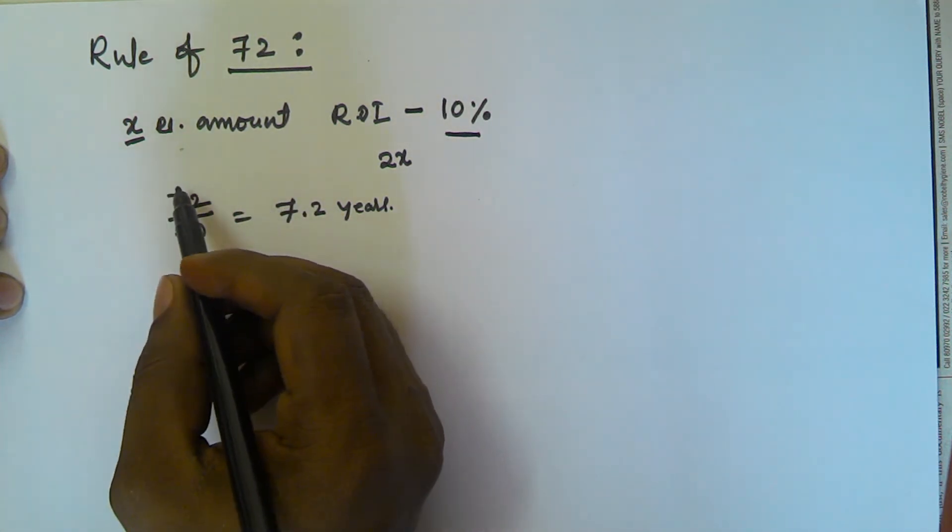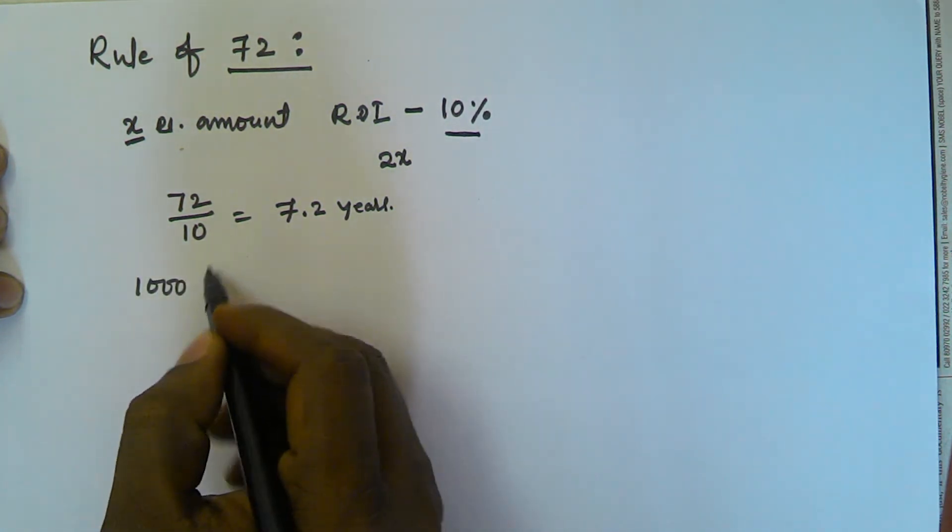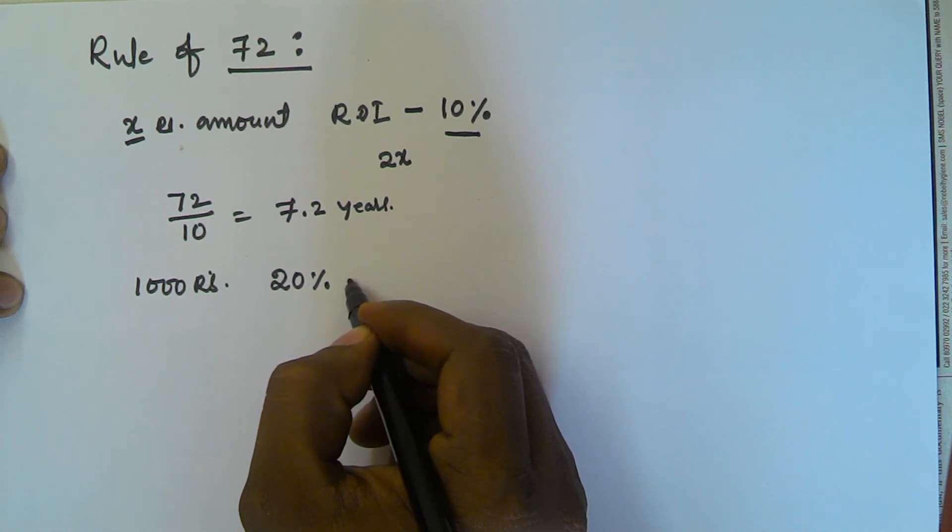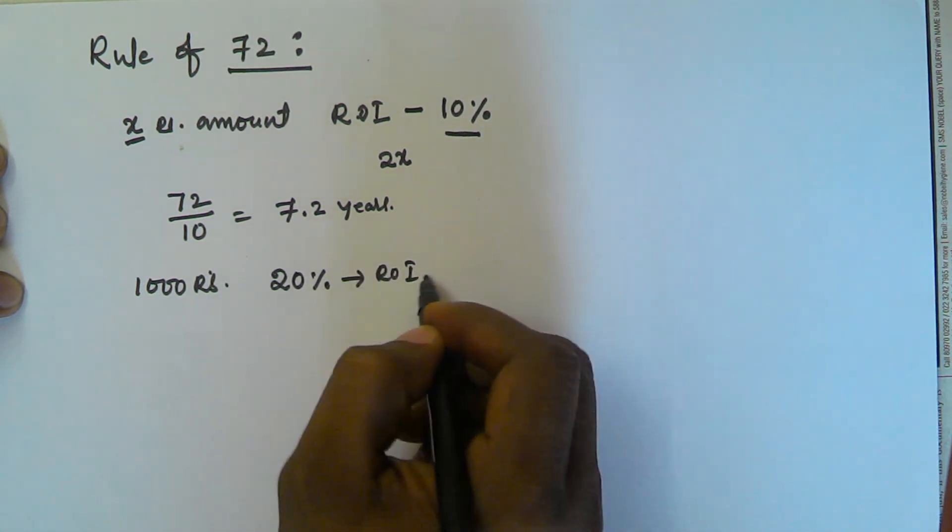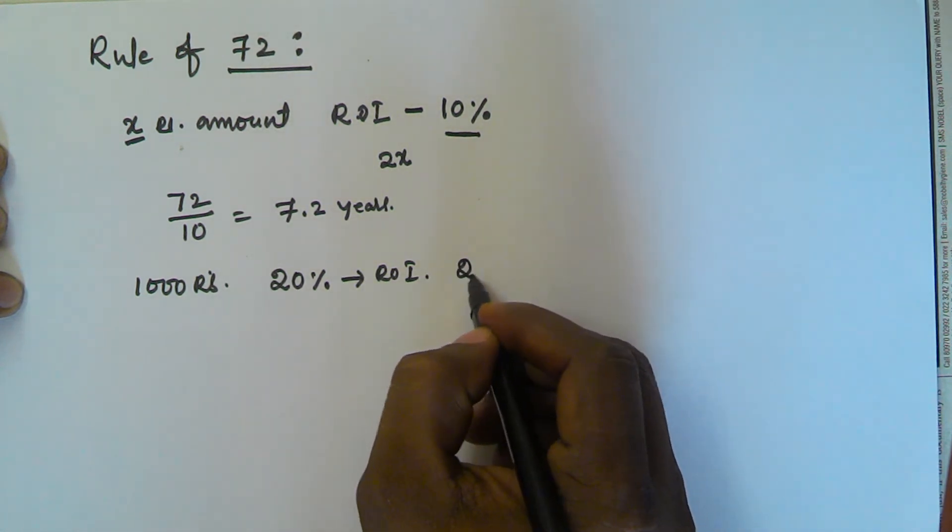So that is what rule of 72. For example, we have 1000 rupees and the rate of interest is 20% per year. So after how many years the amount will be 2000.